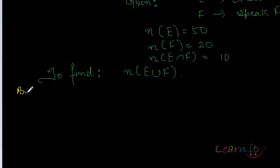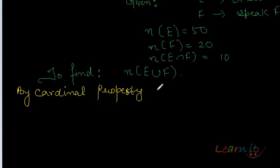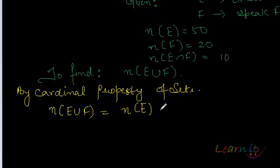Now by cardinal property, sets have a cardinal property. So by that, you know that n(E union F) equals to n(E) plus n(F) minus n(E intersection F).